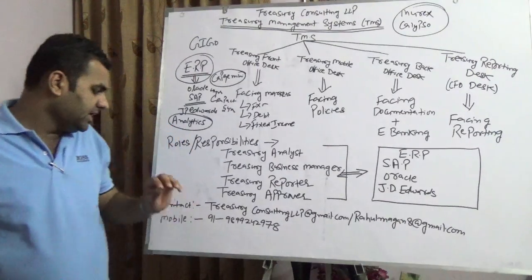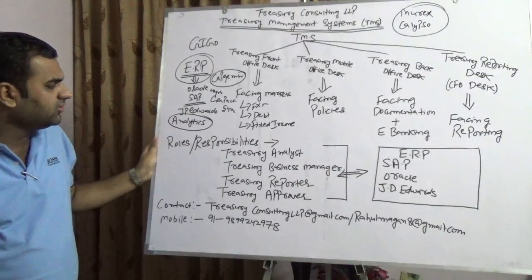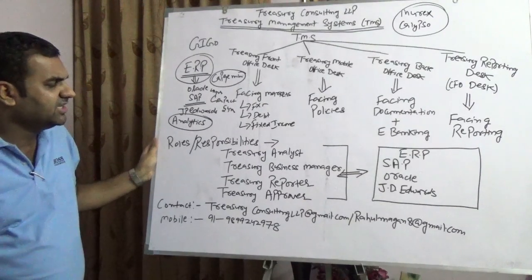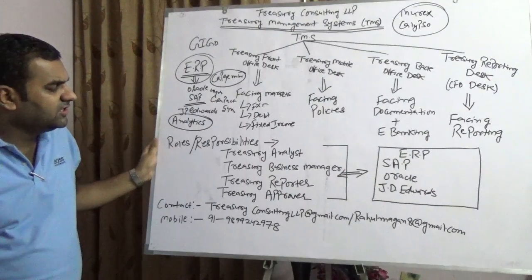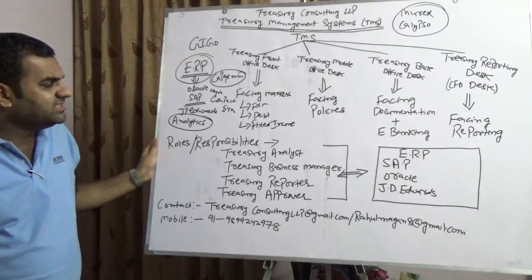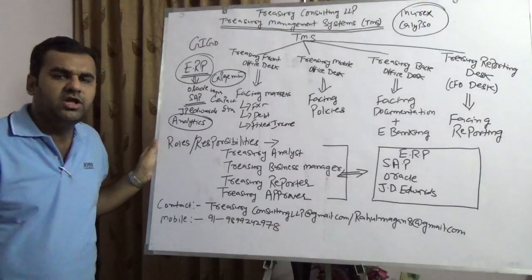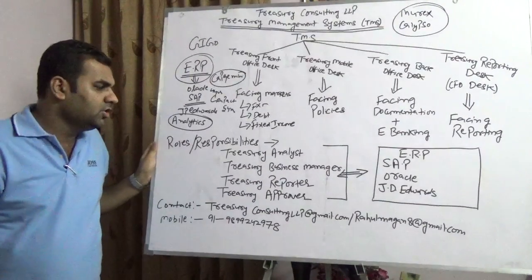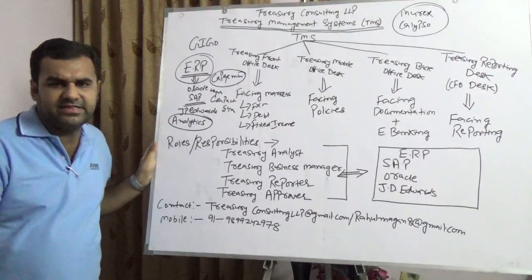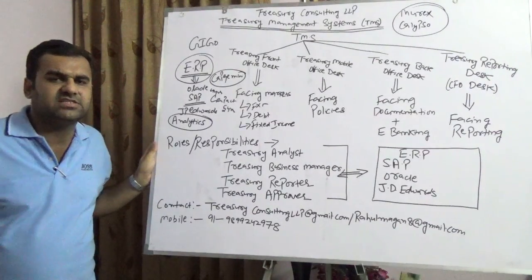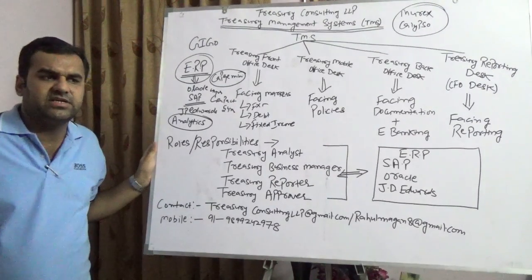Last but not least, in the treasury management system there are a variety of people playing their roles. First, you have the treasury analyst, then the treasury business manager, then the treasury reporter, and then the treasury approver. The treasury analyst is a person who is only entering the numbers. The treasury business manager is the person who validates the work and checks whether things are right and moving in the right direction.